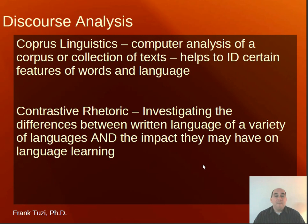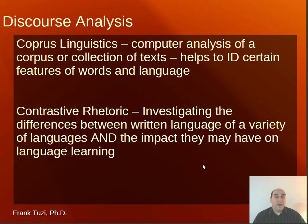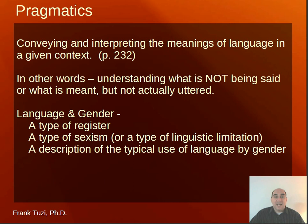There's also contrastive rhetoric — investigating the differences between written language across a variety of languages and the impact those differences have on language learning. You can compare and contrast languages from different parts of the globe. You can also see how one language impacts another. For example, I could probably think of a hundred words in Japanese that come directly from English or other languages, but I probably couldn't find a dozen words in English that come from Japanese. That's contrastive rhetoric — seeing where one language impacts the other.